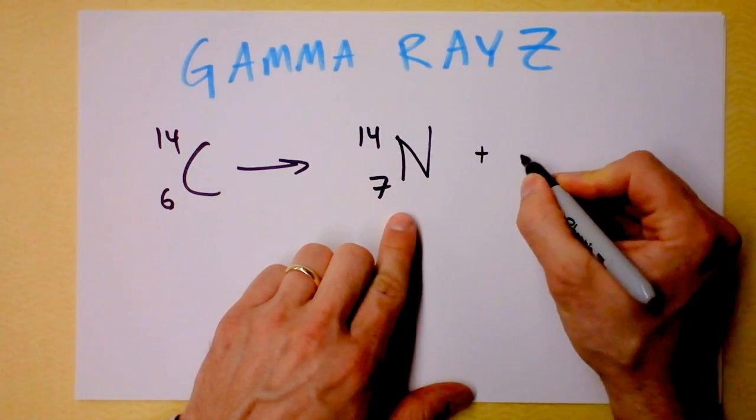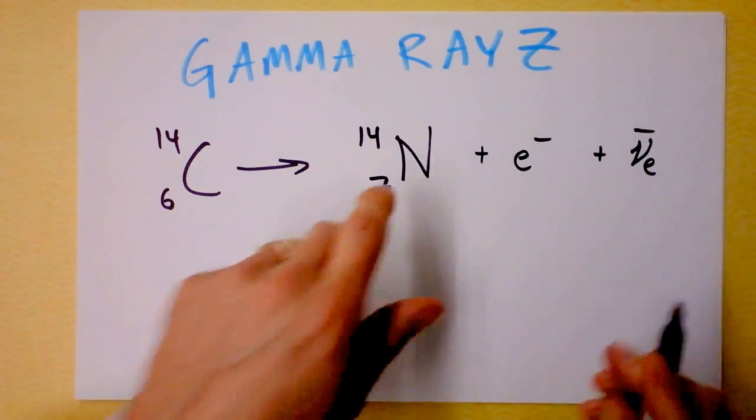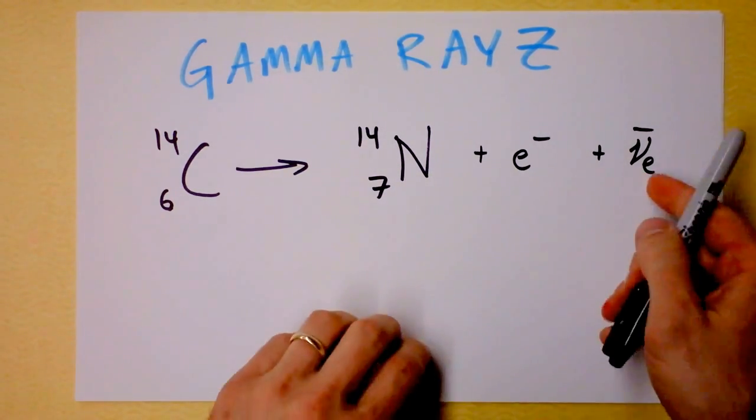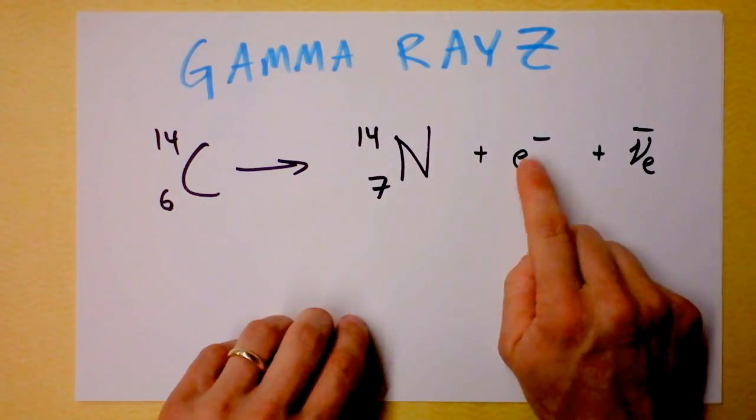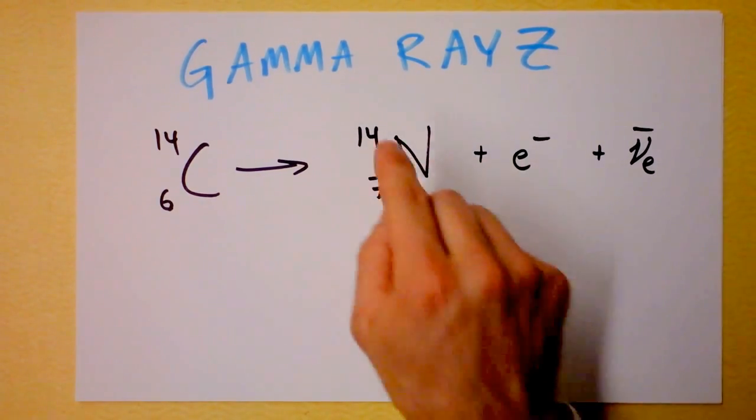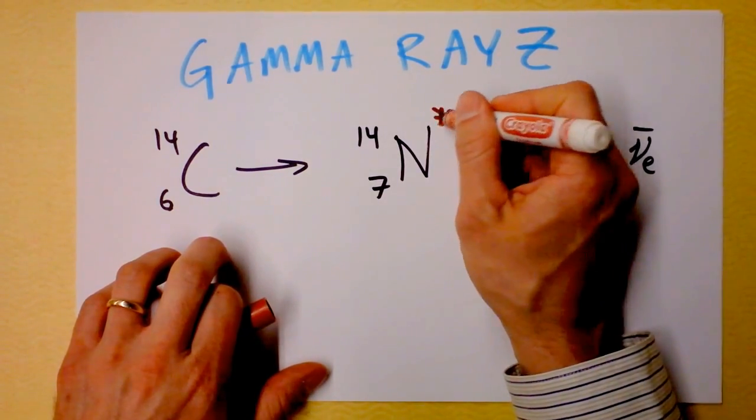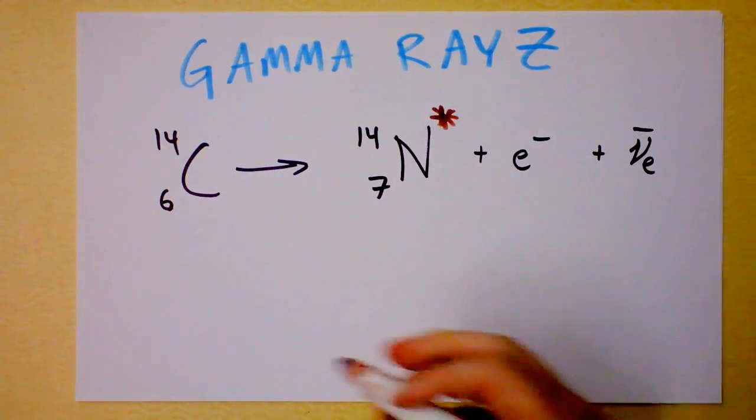That's going to also give off an electron and an anti-electron neutrino, which I don't want to talk about much except to say that they're small and neutral. But this electron here and this nucleus - that nucleus is no longer just nitrogen-14, it's actually nitrogen-14 asterisk.